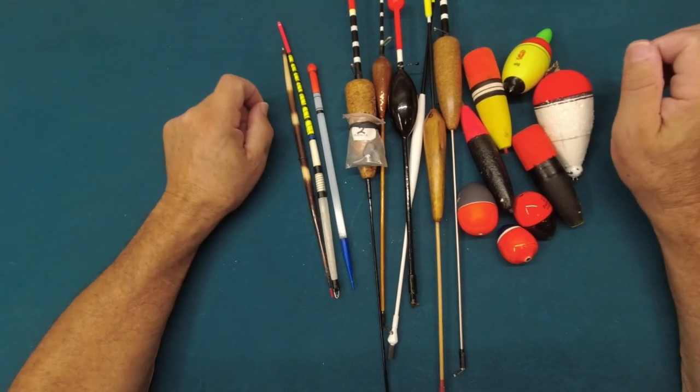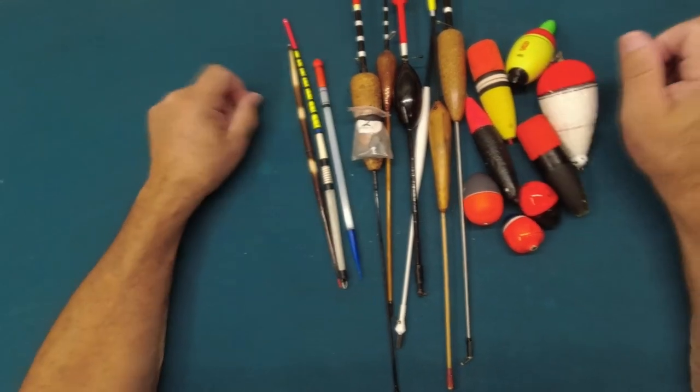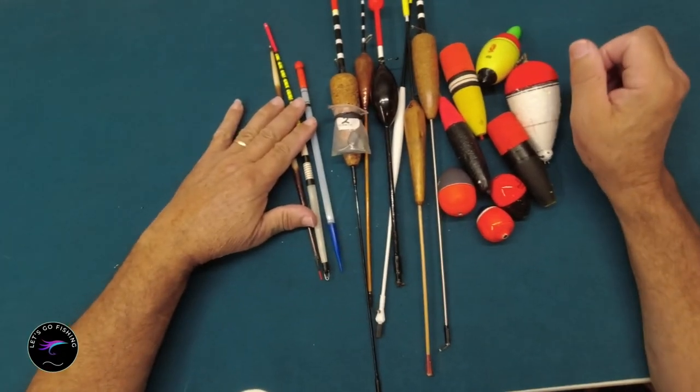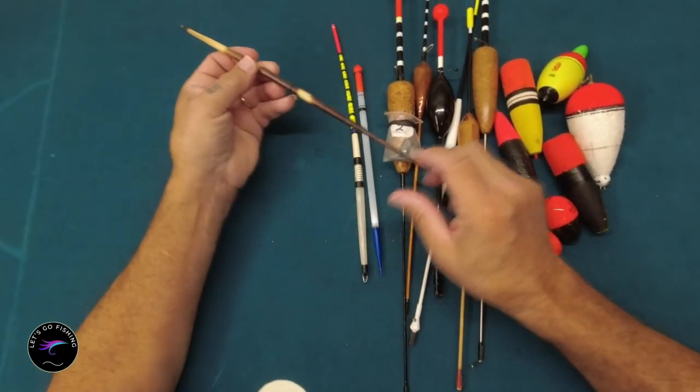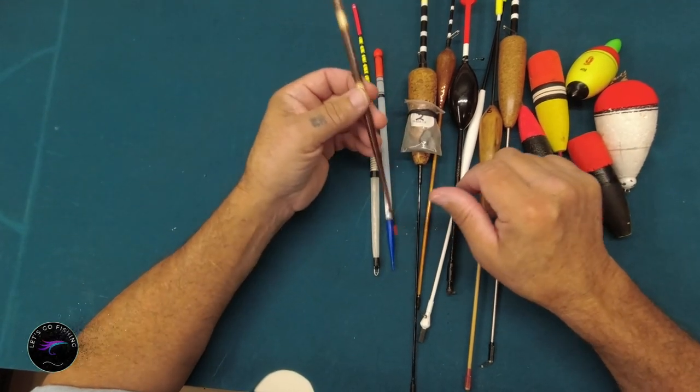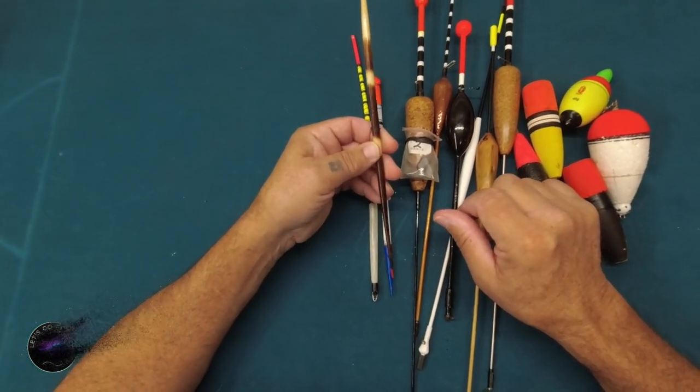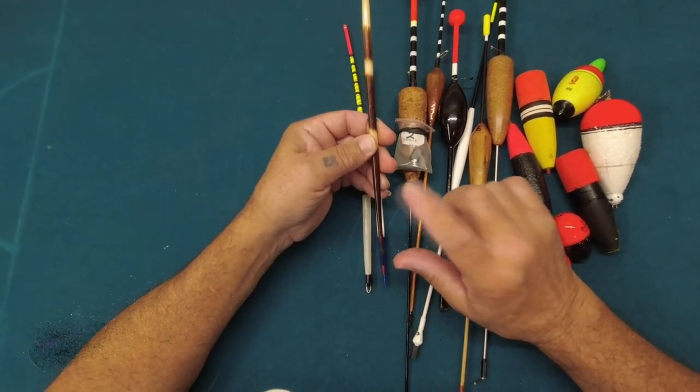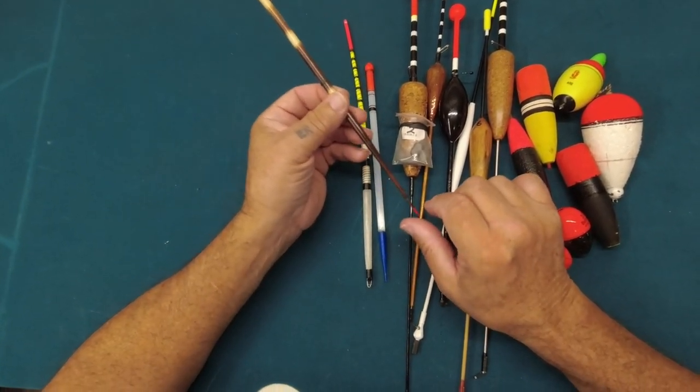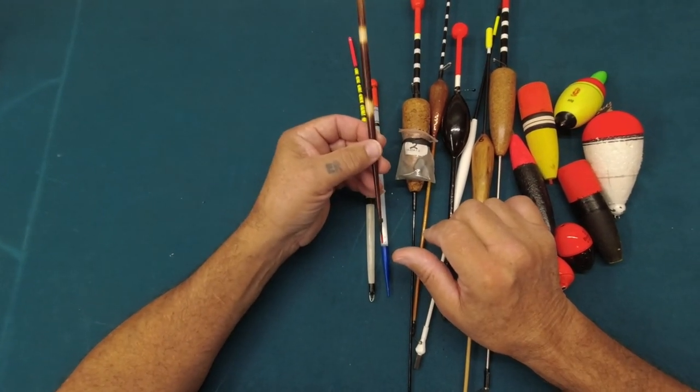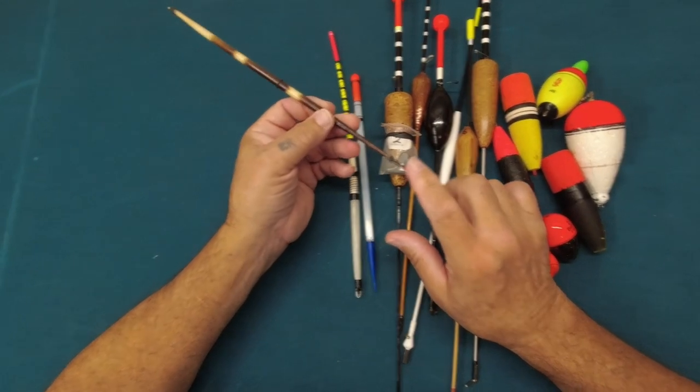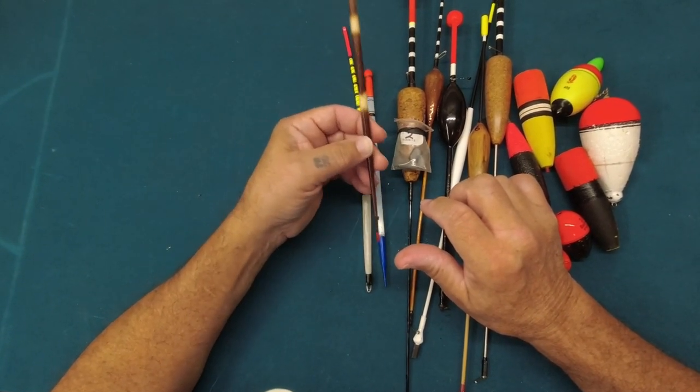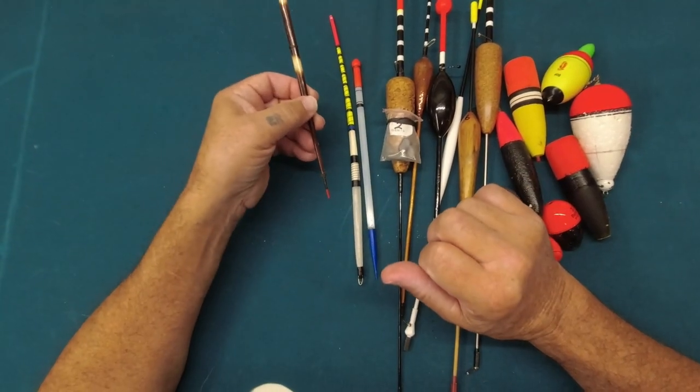Alright, here are some of my floats. I picked out a few. We'll start from this side. This here is my favorite quill float. I've had it for years. That one was given to me by an old mate of mine who's no longer with us, so it has sentimental value and I don't use that one anymore. I don't know if you can get these anymore, but that one there is my favorite quill float.